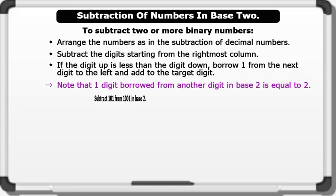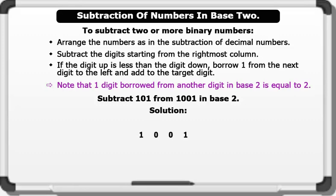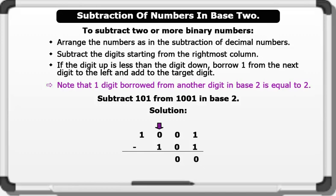Let's see an example. Subtract 1 0 0 1 from 1 0 0 0 1 in base 2. Solution: 1 0 0 0 1 minus 1 0 0 1. Starting from the right: 1 minus 1 equals 0. 0 minus 0 equals 0. 0 minus 0 equals 0. Since 0 is less than 1, we borrow 1 from the next digit and add it to 0, making it 2. 2 minus 1 equals 1.